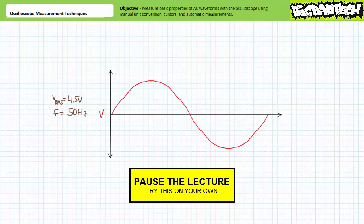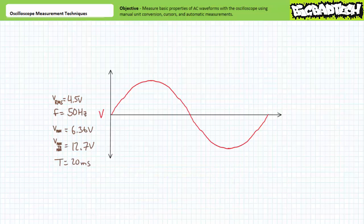If you're tracking, you should have obtained the following results. A waveform with an effective value of 4.5 volts and a frequency of 50 hertz has a peak value of approximately 6.4 volts, a peak-to-peak value of approximately 12.7 volts, and a period of 20 milliseconds. Calculation is complete. We are now free to move on to the remaining steps.